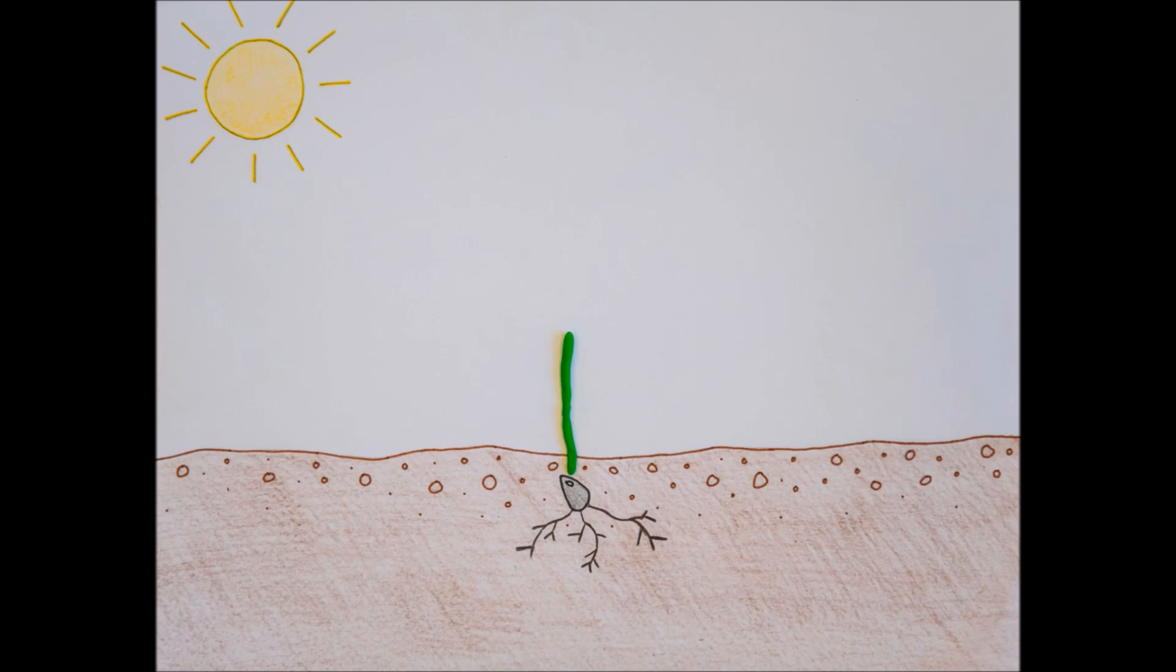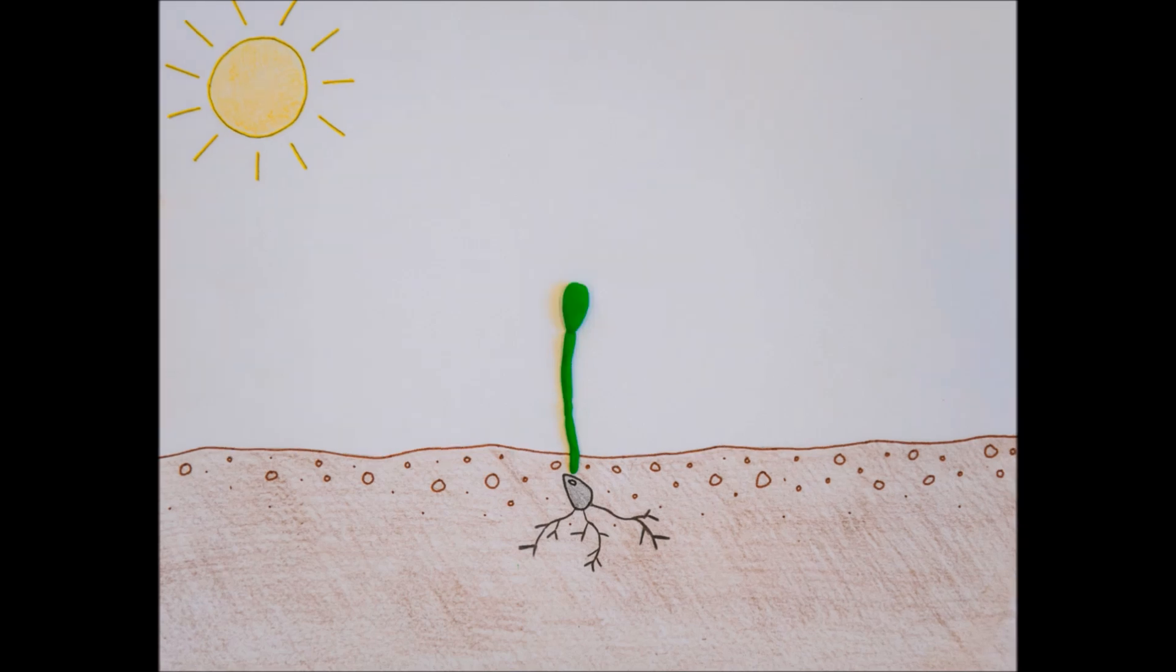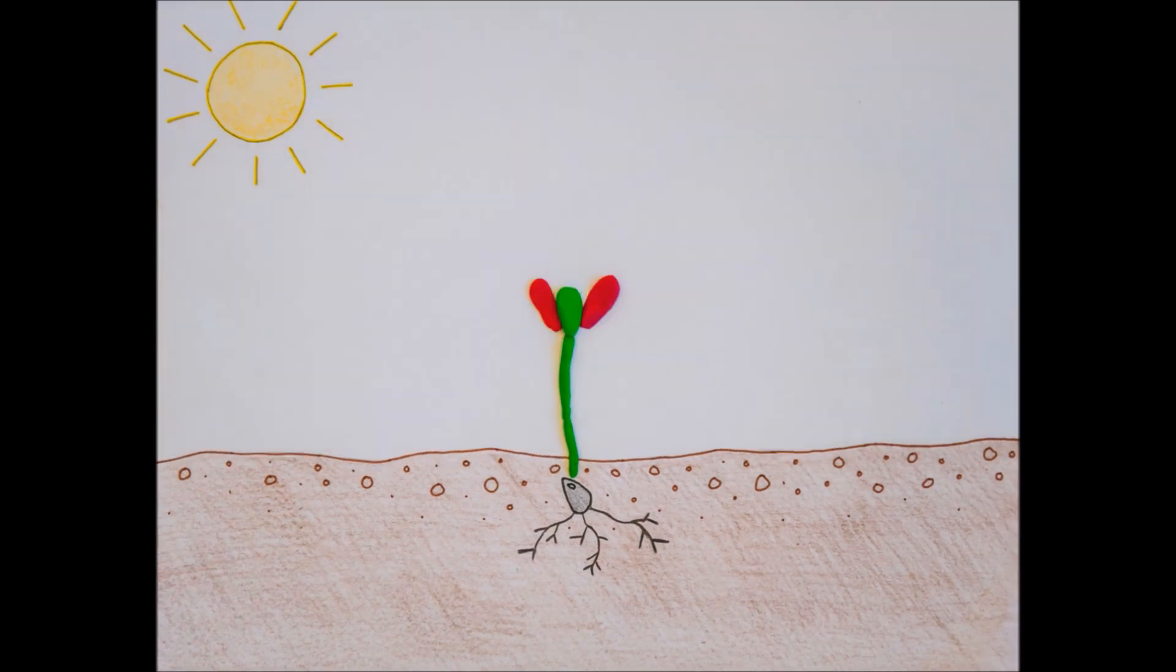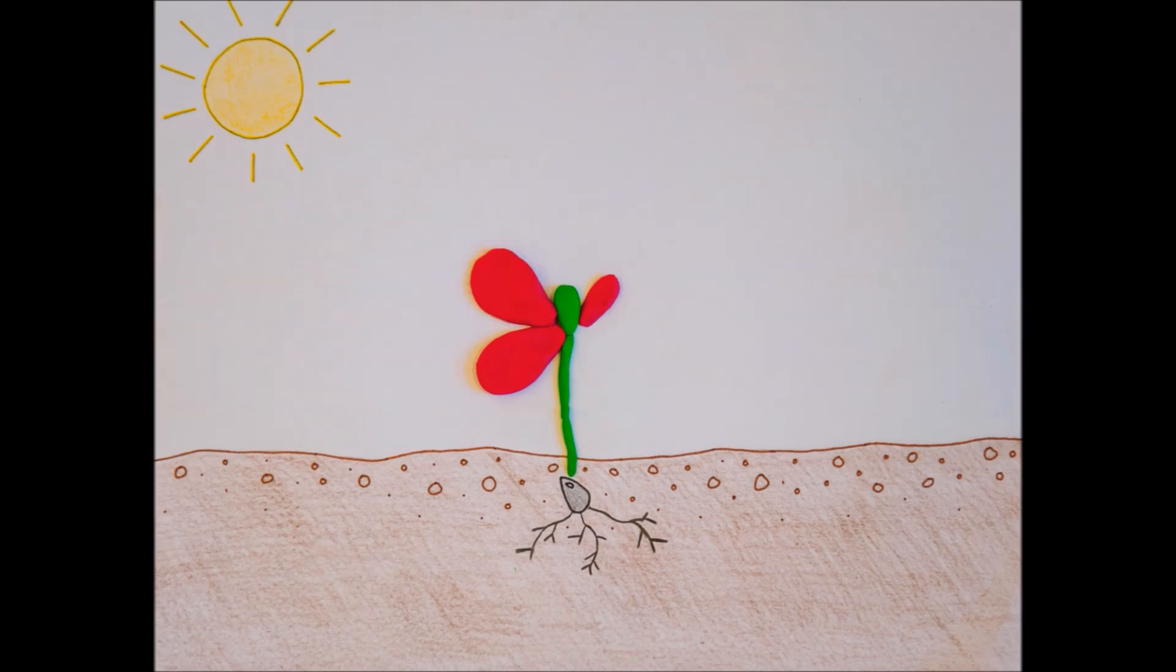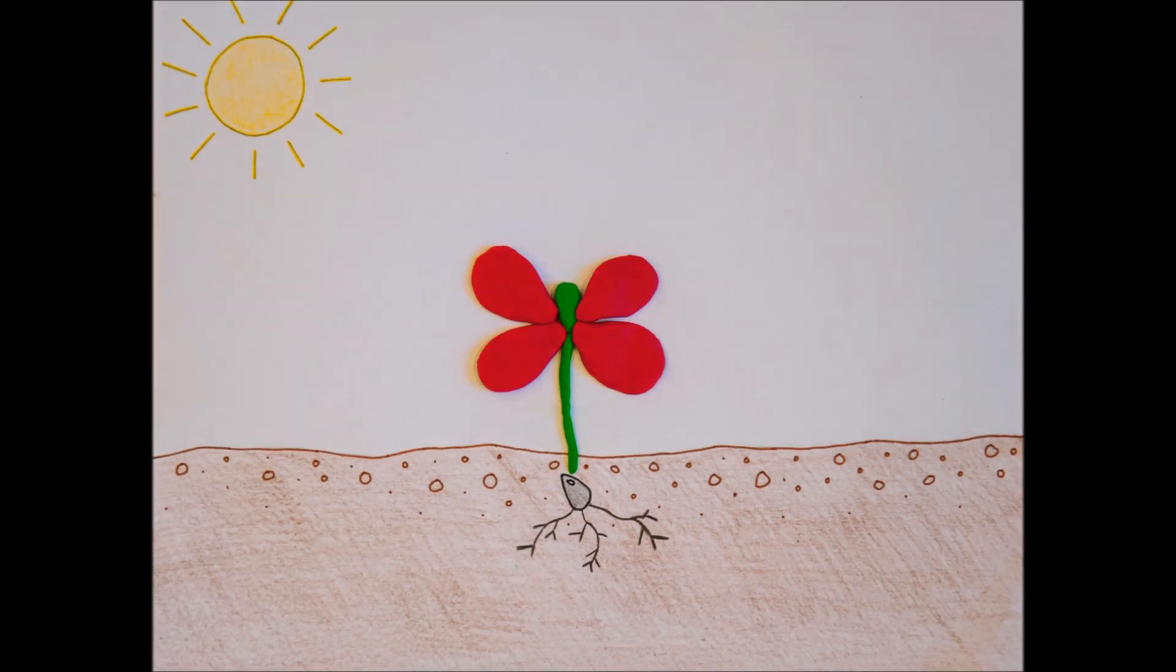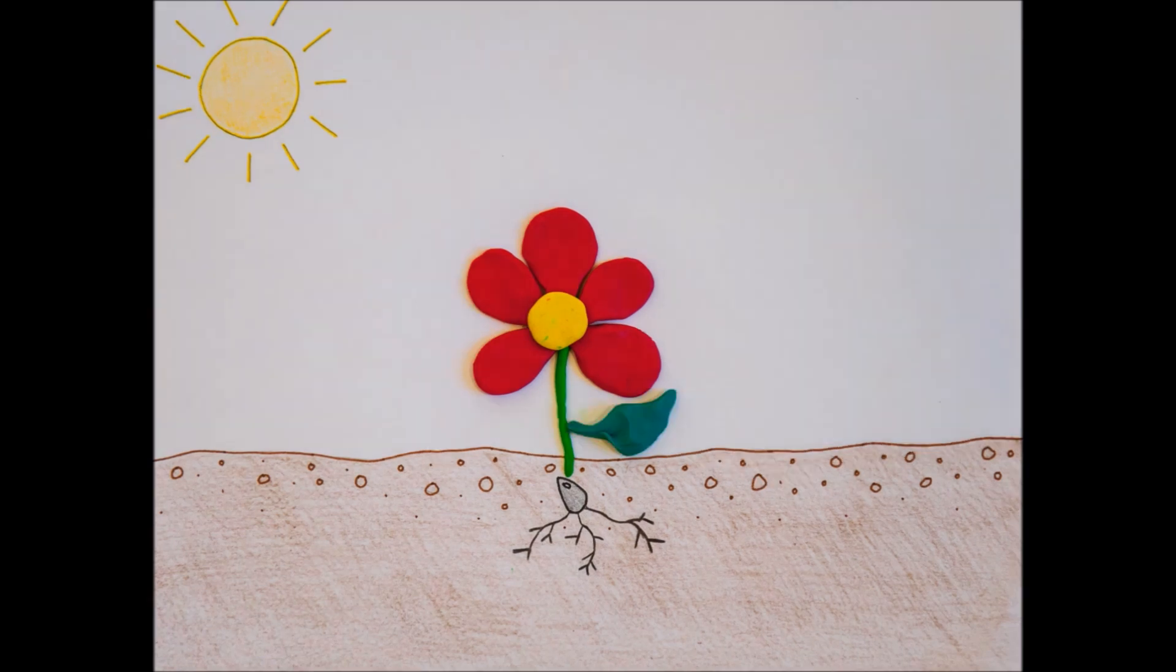The stem keeps growing and growing, and a bud is formed at the top. The bud blossoms and turns into a beautiful flower. The flower is now fully grown and produces pollen.